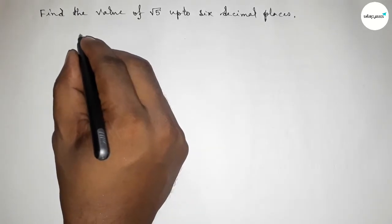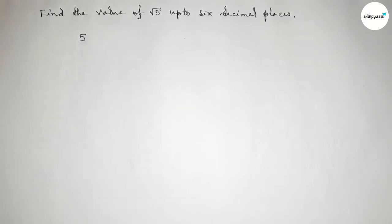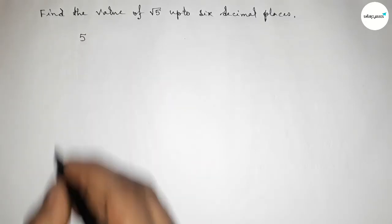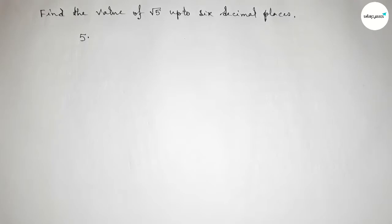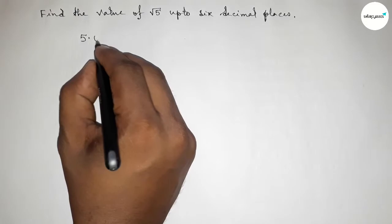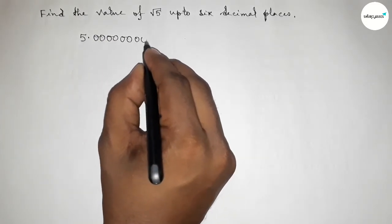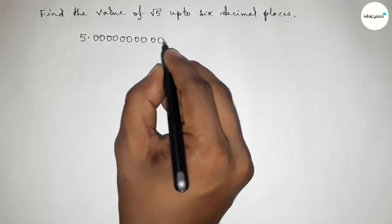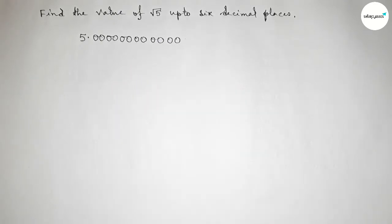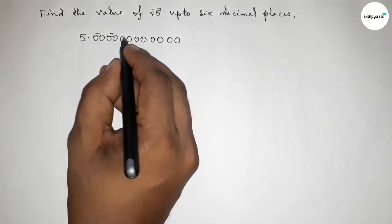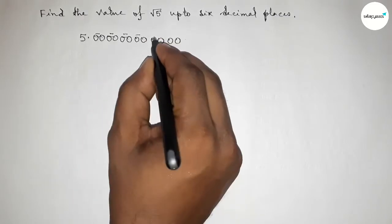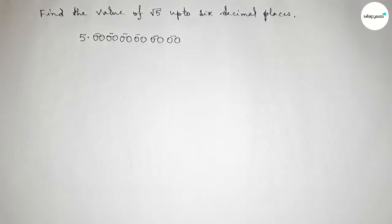First of all, write here the number 5, then place a decimal point. For up to 6 decimal places, we have to write 12 zeros. Taking 2 zeros as a pair, we get 6 pairs of zeros.